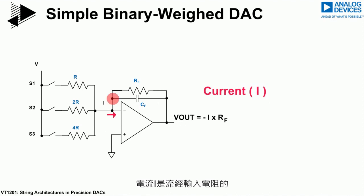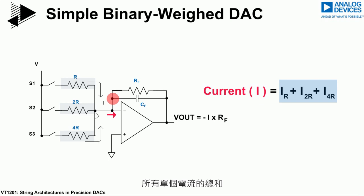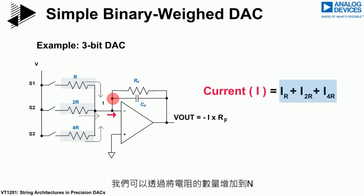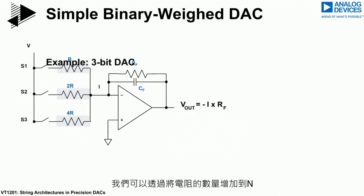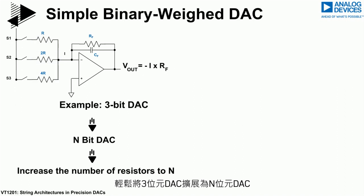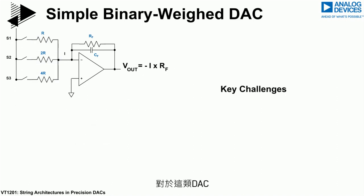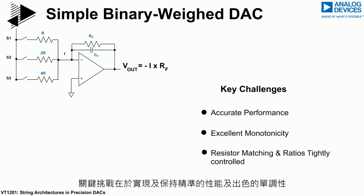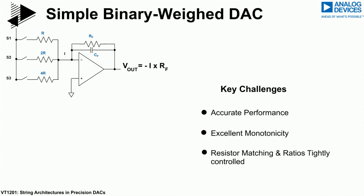The current I is the sum of the individual currents flowing through the input resistors. Here we show a 3-bit DAC, which can easily be expanded to an n-bit DAC by increasing the number of resistors used to n. Some key challenges associated with this type of DAC are achieving and maintaining accurate performance and excellent monotonicity, due to the resistors needing to be matched and the ratios tightly controlled.